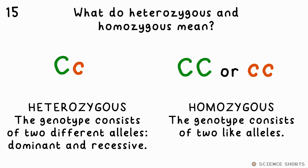These refer to the two alleles for a certain gene an organism has. In our last example, the two parents had heterozygous alleles — they're different; hetero means different. If the child had little c, little c, or big C, big C, these would both be homozygous instead.